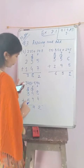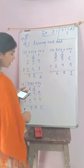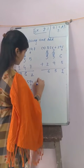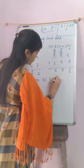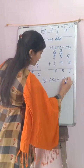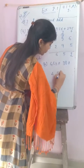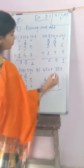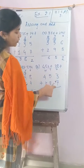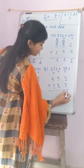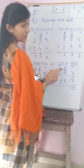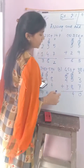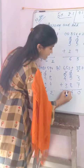Then 3 plus 1 carry equals 4, 4 plus 5 equals 9. The answer is 942. And the last one, h: 453 plus 387. Ones, tens, hundreds. Starting from the ones: 3 plus 7 equals 10, write 0 and carry 1. Then 5 plus 1 carry equals 6, 6 plus 8 equals 14, carry 1. Then 4 plus 1 carry equals 5, 5 plus 3 equals 8. The answer is 840.